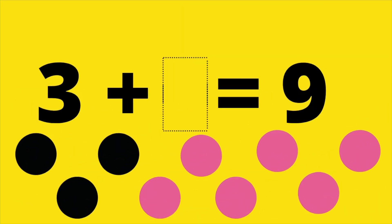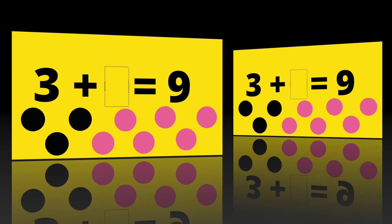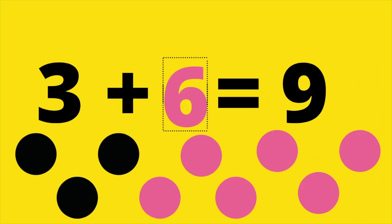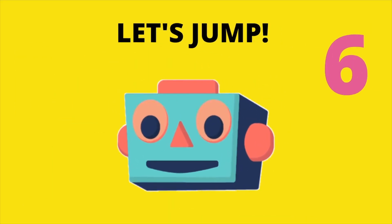All right, our next problem. Three plus blank equals nine. Remember, the pink dots are there to help you figure out the answer. Three plus six equals nine. The correct answer is six. All right, let's get ready for our jumping jacks. Let's go. One, two, three, four, five, six. Excellent work, everyone.